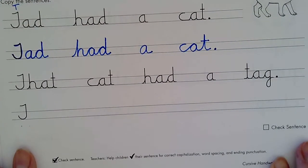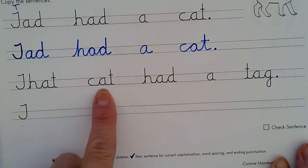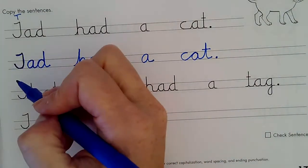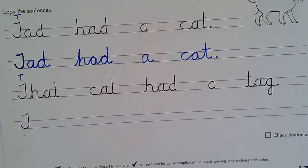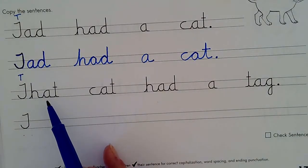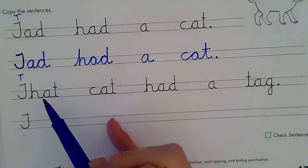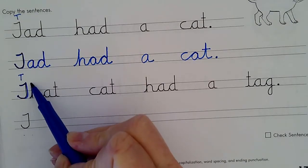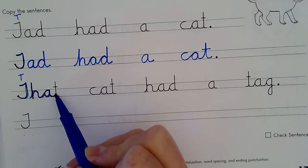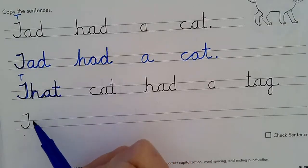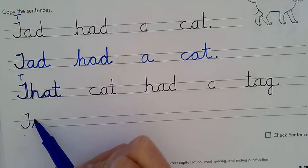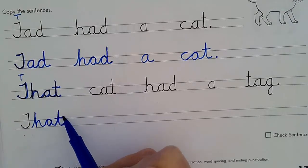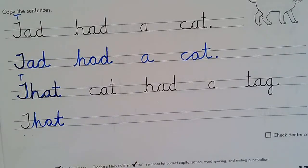And then the final sentence says that cat had a tag. That cat had a tag. So remember this is a T. The cursive T looks very funny, doesn't it? So you're going to practice. If it's hard for you to copy, you might want to start by tracing the letters up top like this. Like after I practice the word that, then I could come down here and I could do it on my own. Okay, so you do what you need to do. Have fun.